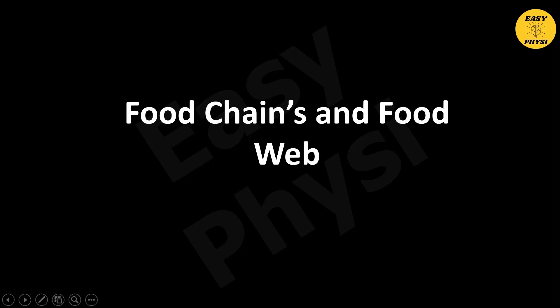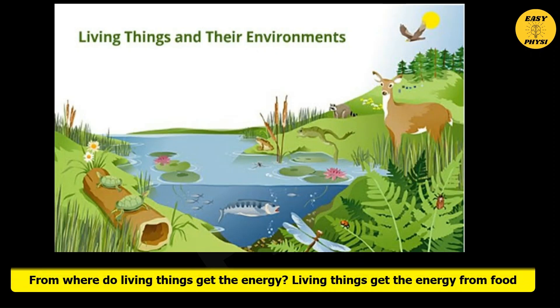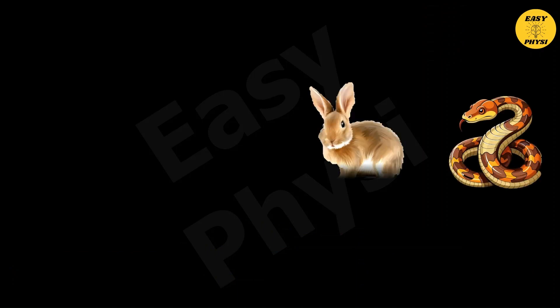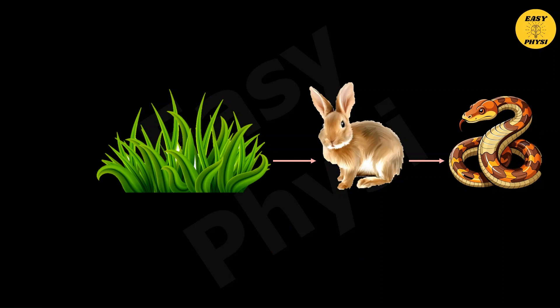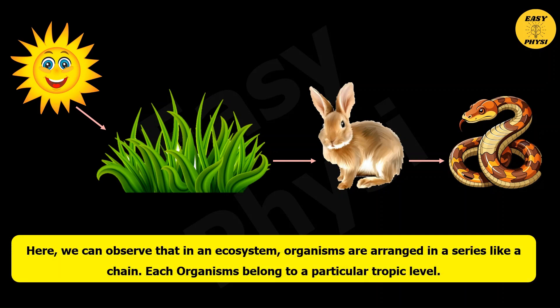Food chain and food web. Living things need energy to live. Where do they get energy from? Living things get energy from food. Snakes get energy by eating rabbits — that means the energy flows from rabbit to snake. But where do the rabbits get their energy from? They get the energy from plants, and plants get the energy from sunlight. So here we can observe that in an ecosystem, organisms are arranged in a series like a chain.